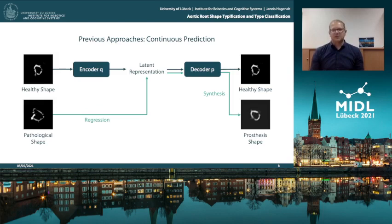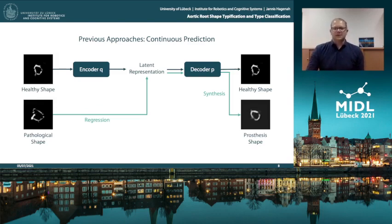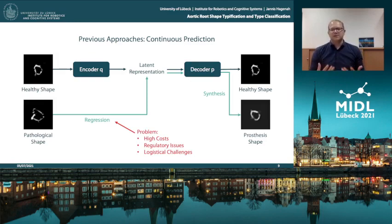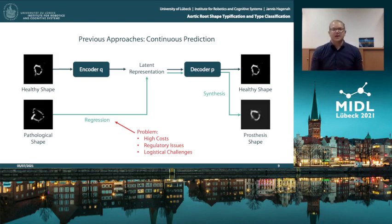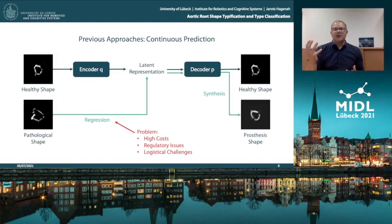As mentioned, this is a continuous prediction model because it's a regression, meaning the model can predict any point within the latent space. This has several downsides from a clinical application point of view. This procedure comes at very high cost, because we create a completely individual and novel prosthesis for each patient, which not only comes with high cost but also with regulatory issues, since each prosthesis is then a completely new device that has never been tested. And of course, we have logistical challenges. So what we ask in this work is whether there is something in between this full personalization with really high costs and the one-size-fits-all approach as it exists in clinic today.